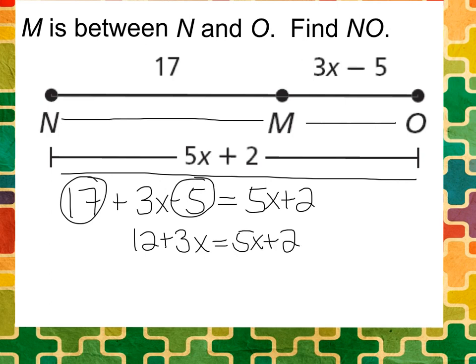In order for us to solve for a single variable we need the variables on one side, so I'm going to minus 3X to both sides and now I have 12 equals 2X plus 2. I'll subtract 2 from both sides and I have 10 equals 2X, and X is going to equal 5.